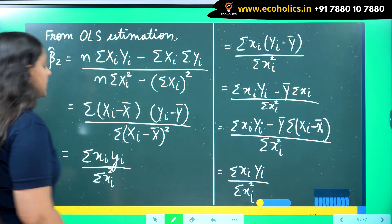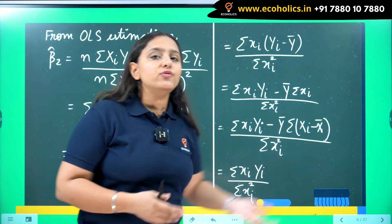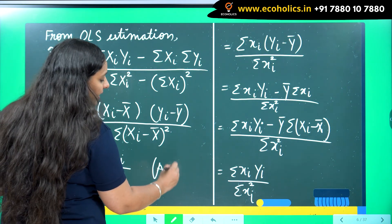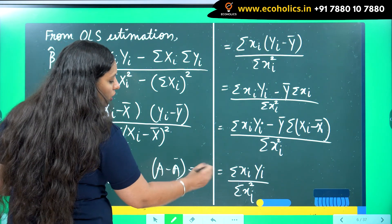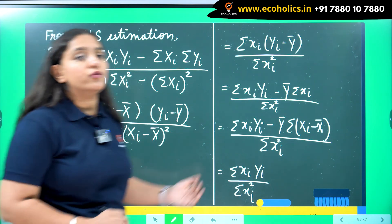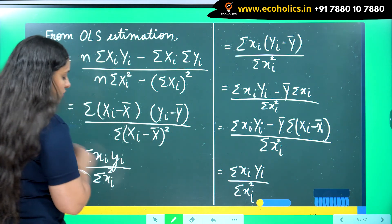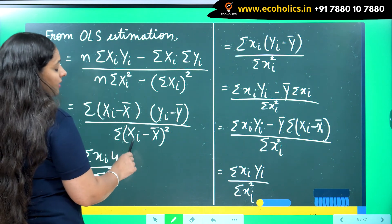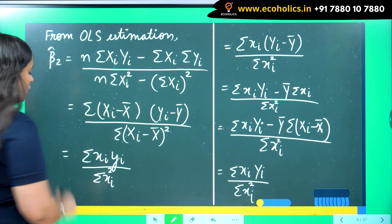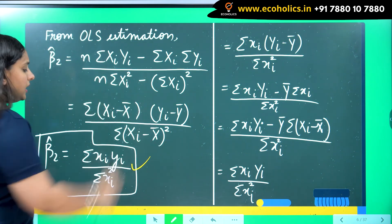Whenever we write a variable as a deviation from its mean, we use the deviation form. Writing (xi minus x-bar) as small xi and (yi minus y-bar) as small yi, we get β̂₂ equal to summation of small xi·yi divided by summation of small xi squared. This deviation-form expression for β̂₂ is useful in many places.